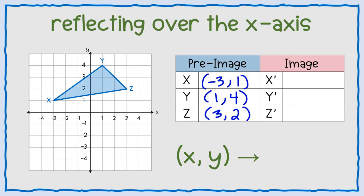So up there in the title it says reflect over the x-axis. The x-axis is the one that goes side to side, so I want to flip this blue figure across that yellow line. We know that every single point in the image is the same distance as it was in the pre-image. So point X was only one away from the line, so I need to do that same thing on the other side — one square away. So X-prime should go right there at negative three, negative one.